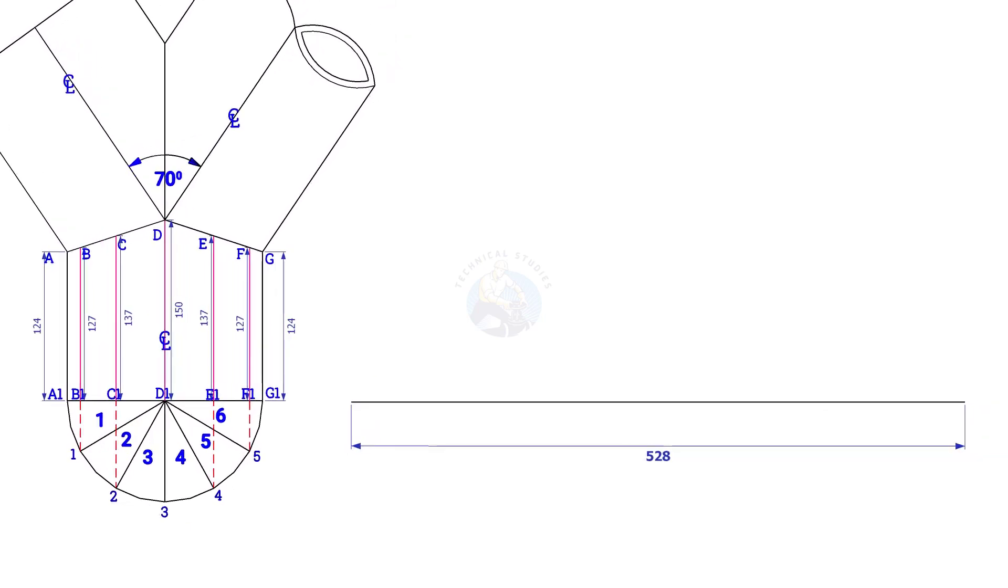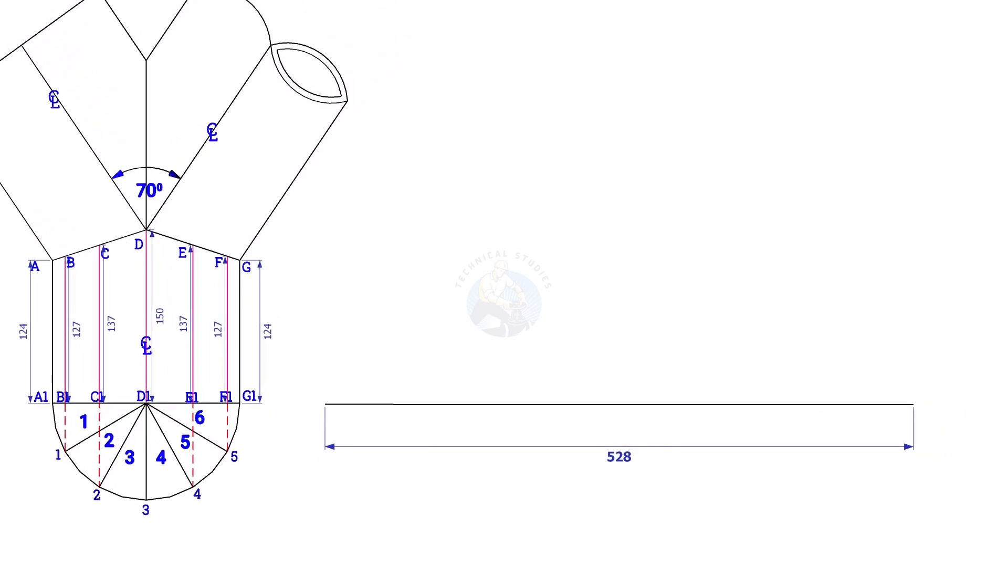Since we divided the half circle into 6 parts, divide the line into 12 equal parts. 528 divided by 12 is 44, so the length of each segment is 44mm. Draw a perpendicular line on the starting of this line. The length shall be 124mm.